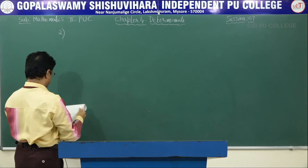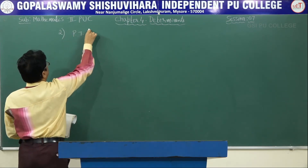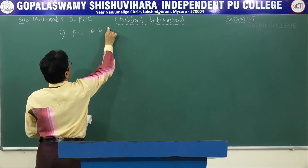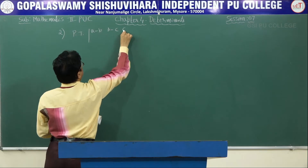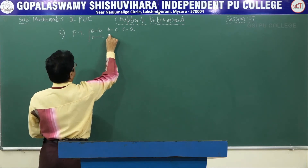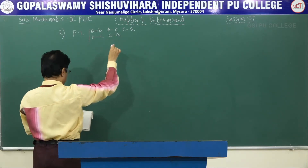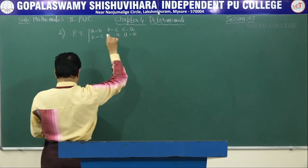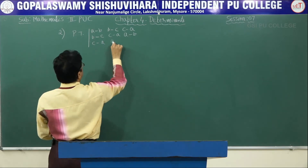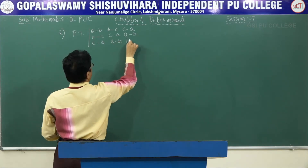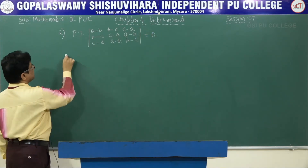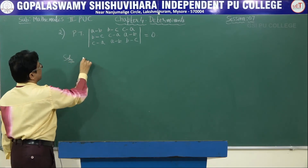Second problem: prove that the determinant of a minus b, b minus c, c minus a; b minus c, c minus a, a minus b; c minus a, a minus b, b minus c equals 0.